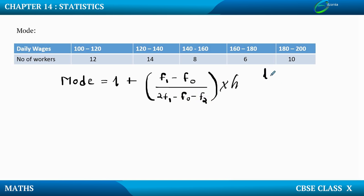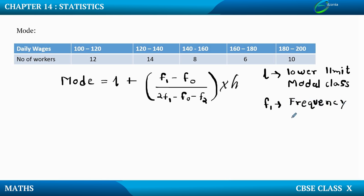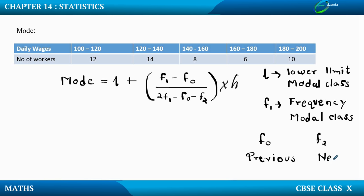Where L stands for lower limit of the modal class. F1 stands for the frequency of the modal class. F0 is the preceding or previous frequency of the modal class, and F2 is the succeeding or next frequency. H stands for class size.